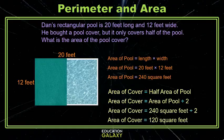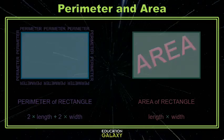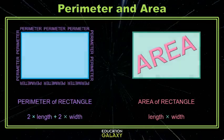So in summary, for rectangles: perimeter is the distance around, calculated as two times length plus two times width, and area is length times width.